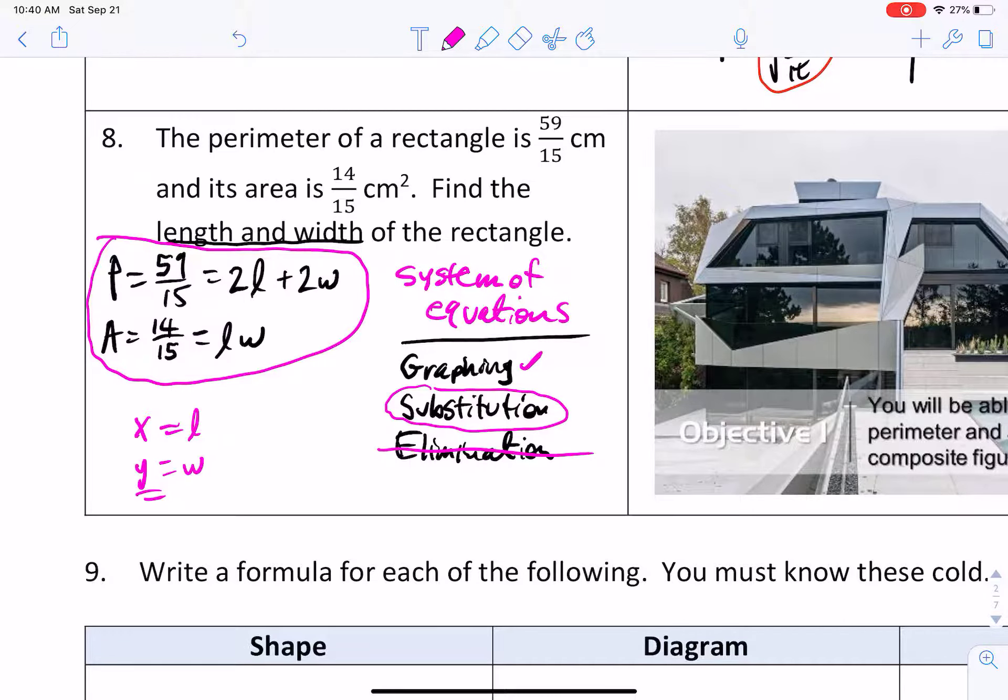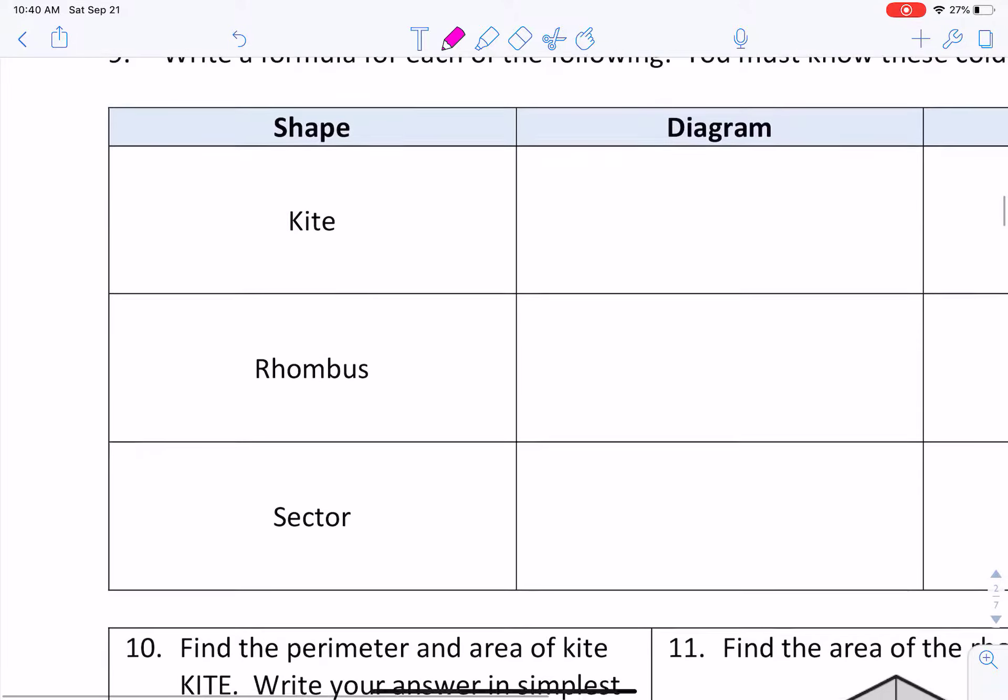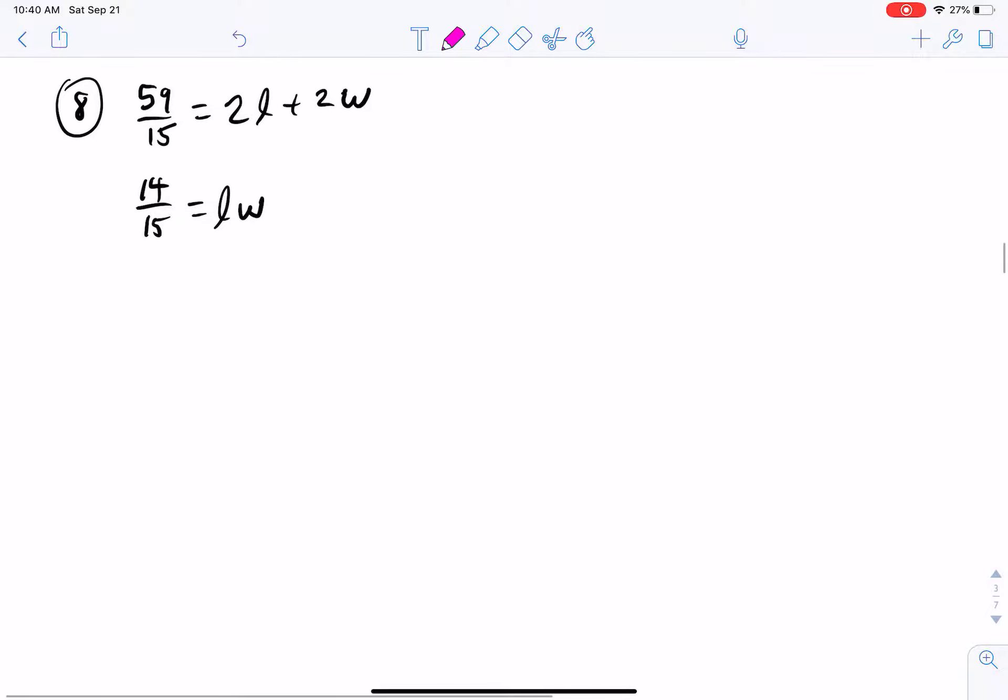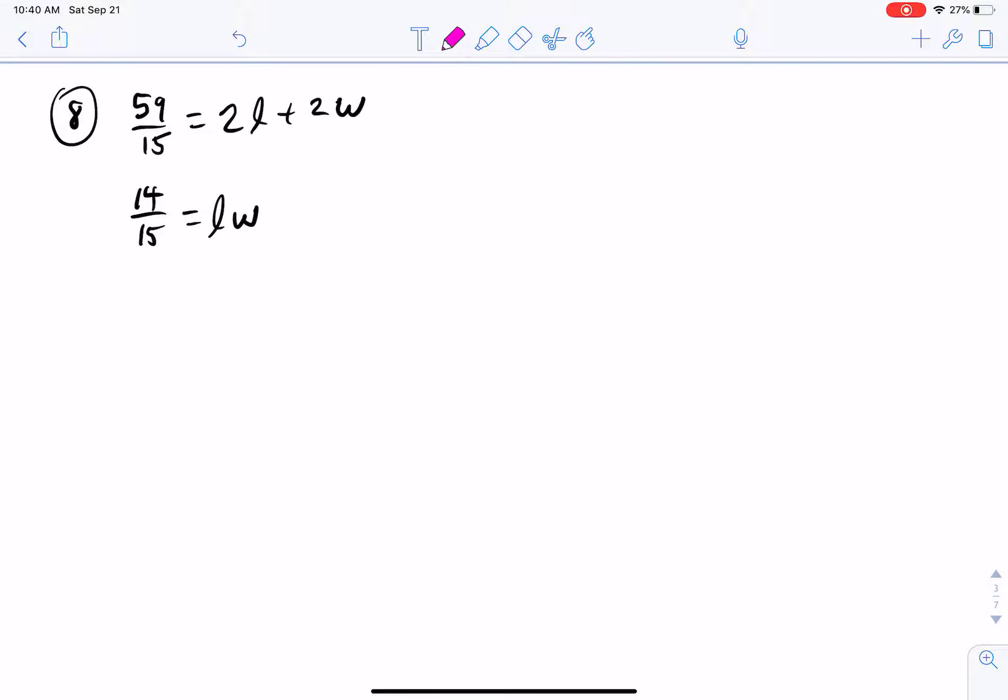We're going to pick one of these variables to solve for and substitute it back into the other equation. Obviously, there's just not enough room to do this here. So I just happen to have this a little further down here. So as I mentioned, we're going to solve this one by substitution. To do that, I've got to pick one of these variables to solve for, either the w or the length.